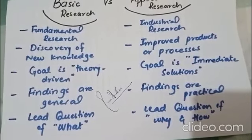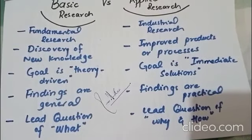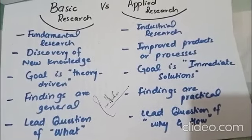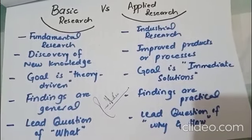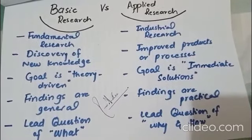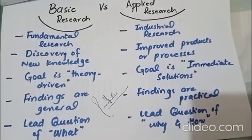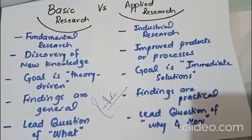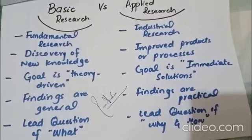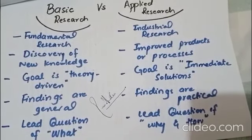Applied research tries to find the answer to two important questions: why this happened, and how this happened — and how we can resolve this issue. As you can see, the steps are quite easy. If you go through it and understand it, it's very easy to learn how to differentiate both of them. Hopefully there will be no more confusion between basic and applied research.